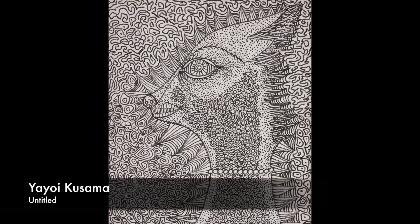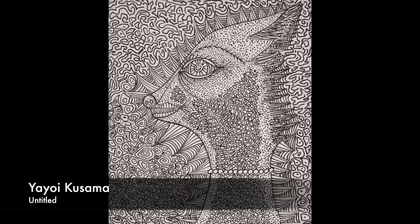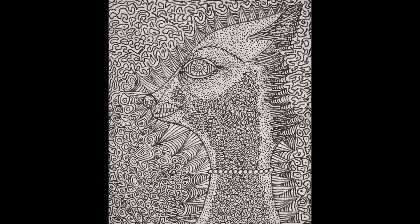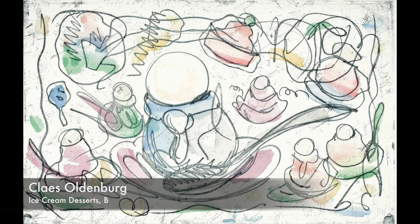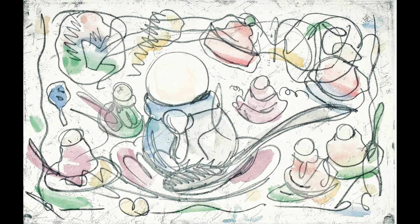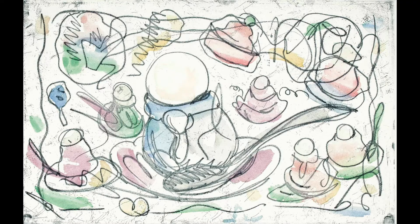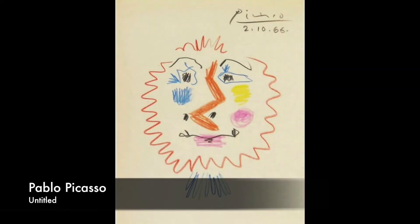This doodle is by the avant-garde artist Yayoi Kusama. She made this with marker. This is a print of a doodle made by Klaus Oldenburg. Klaus Oldenburg made four very large sculptures in Philadelphia.